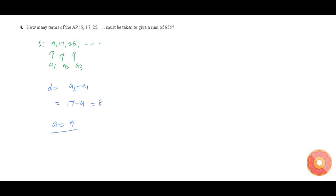We need to find how many terms to be taken such that the sum is 636. The formula to find the sum to n terms in an AP Sn is n by 2 into 2a plus n minus 1 into d. We know Sn, we know a and we know d. We just need to find n.